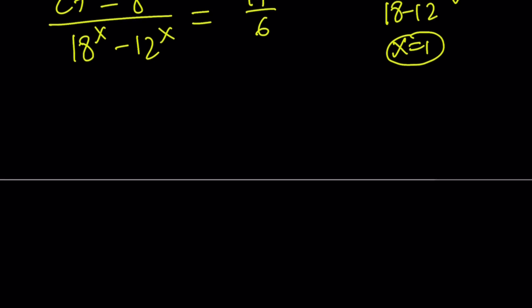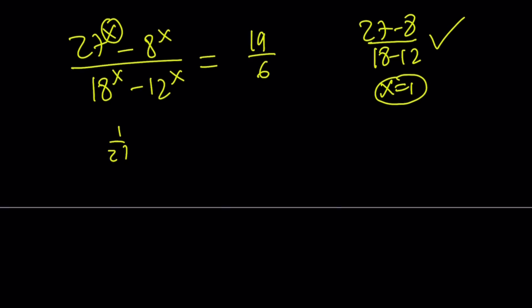Oopsies. Let me plug in a negative 1. That's going to give me 1 over 27 minus 1 over 8 divided by 1 over 18 minus 1 over 12. And here, you can write this as 8 times 27. Oops, I'm supposed to subtract here. 8 minus 27 over 27 times 8, and that's going to be 12 minus 18 over 18 times 12.